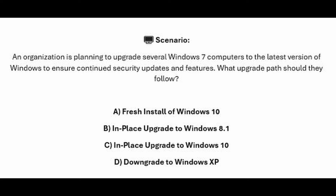An organization is planning to upgrade several Windows 7 computers to the latest version of Windows to ensure continued security updates and features. What update path should they follow? Is it A, a fresh install of Windows 10? Is it B, In Place Upgrade to Windows 8.1? Is it C, In Place Upgrade to Windows 10? Or is it D, Downgrade to Windows XP?